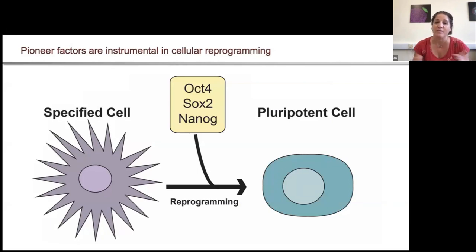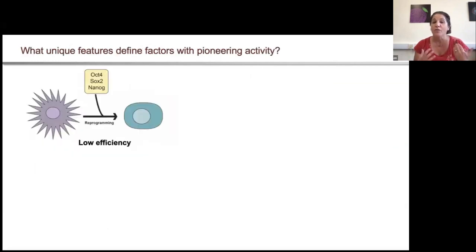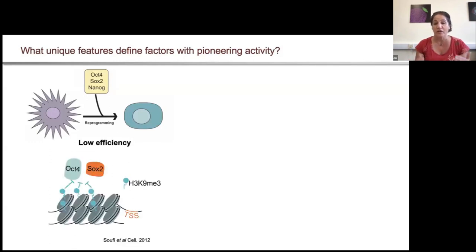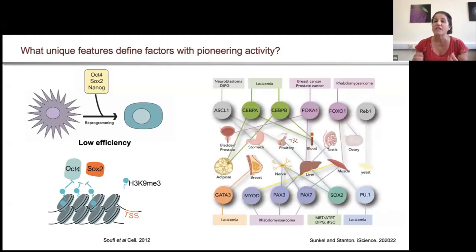At the same time, we know that these pioneer factors aren't all powerful — there are limitations. Reprogramming in culture is low efficiency and can take weeks. We know there are chromatin barriers to the binding of these pioneer factors; for instance, H3K9 trimethylation can inhibit the binding of OCT4 and SOX2. This is really important and reflected in disease as well, because pioneer factors are mis-expressed in a large number of cancers, specific to individual cancer types.